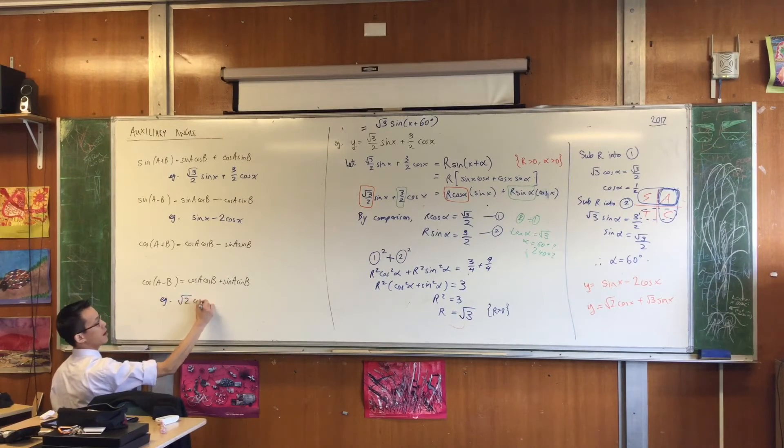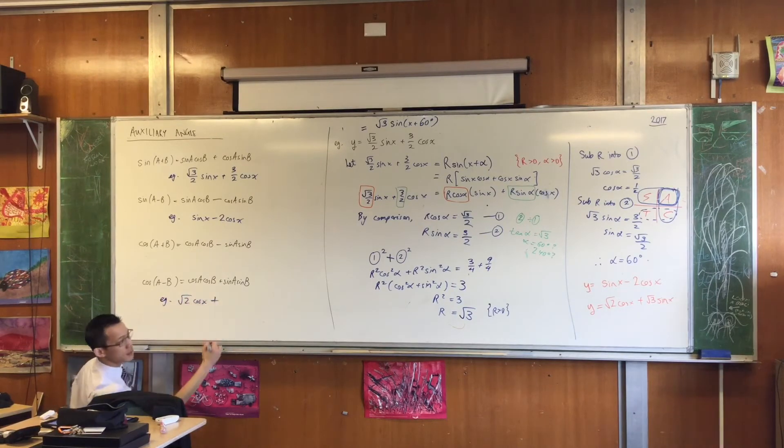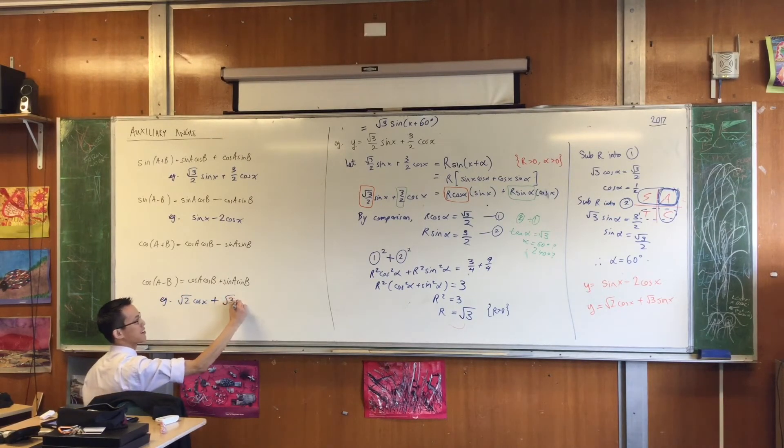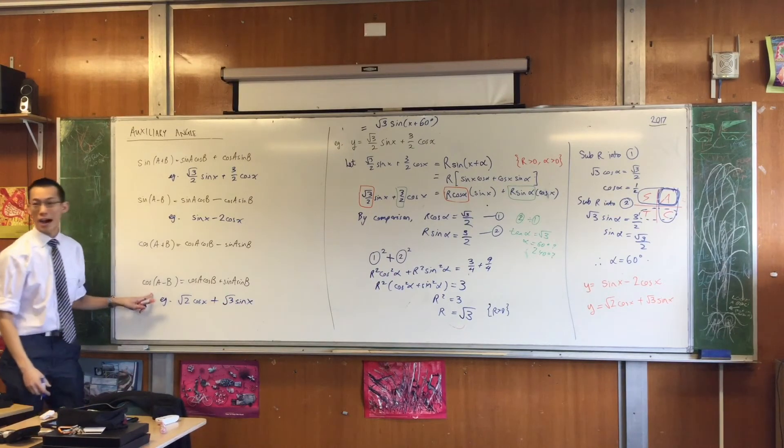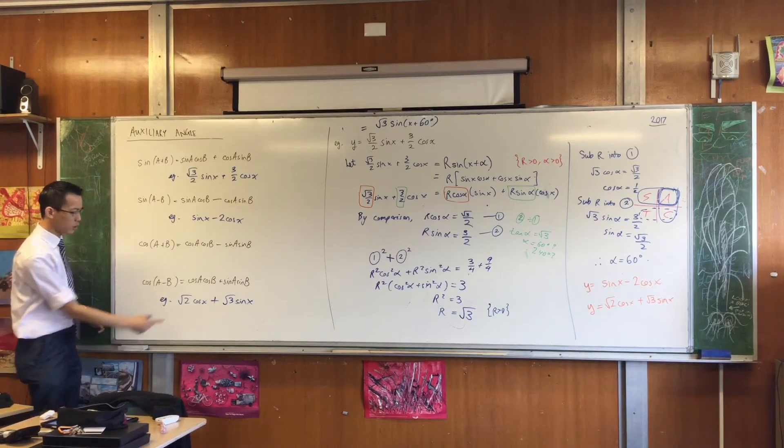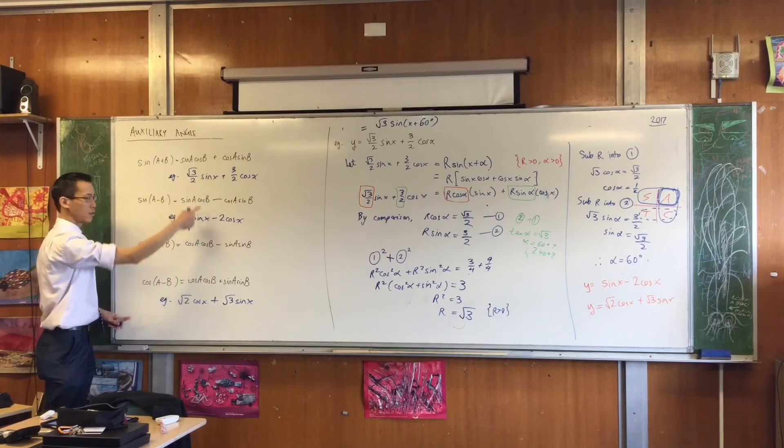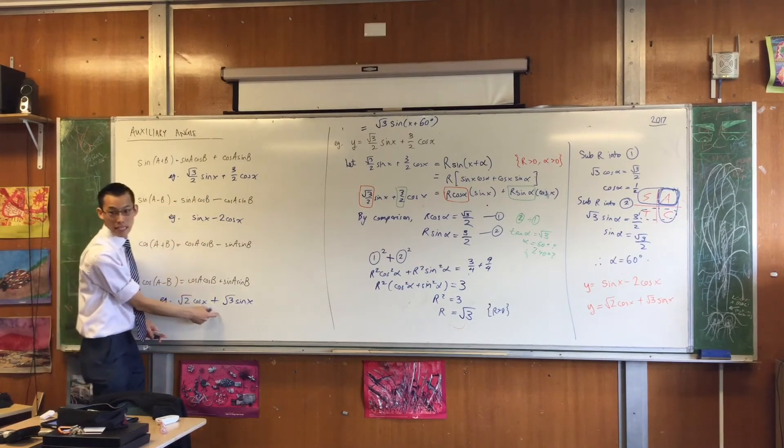e.g. root 2 cos x plus root 3 sine x, this is the form that I would choose. So look at what is first, look at what's first, and then pay attention to the sign.